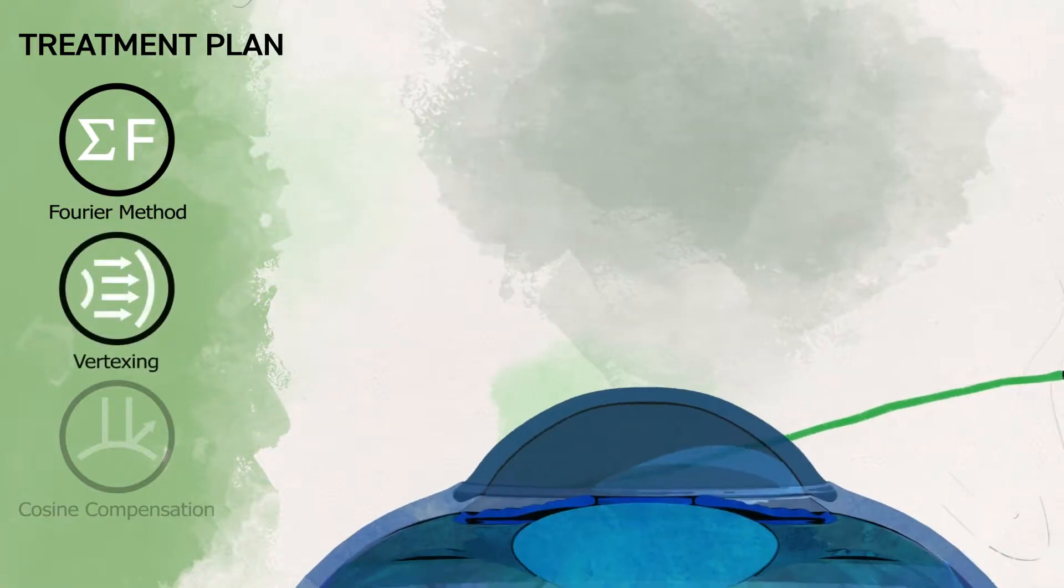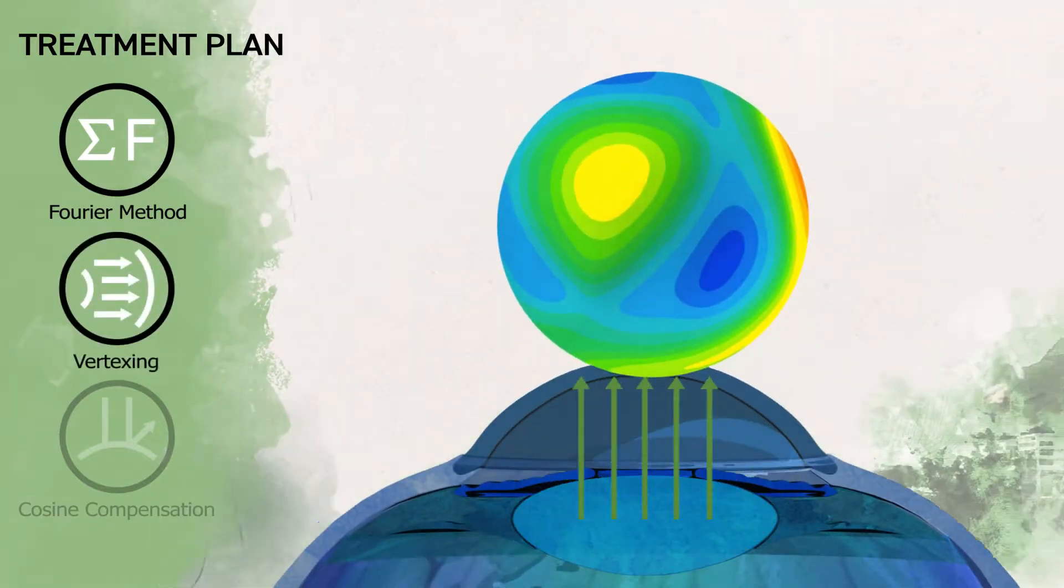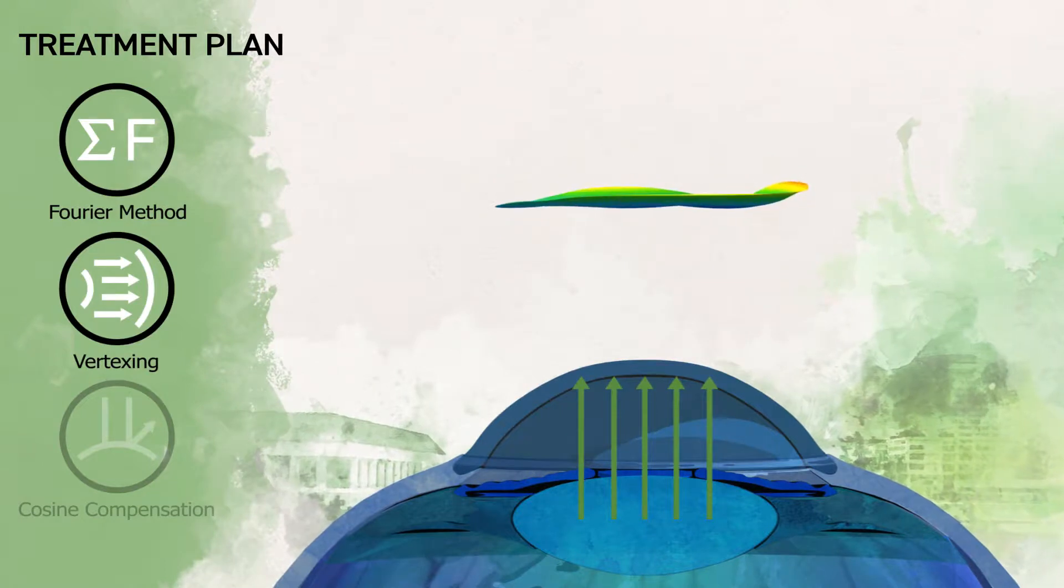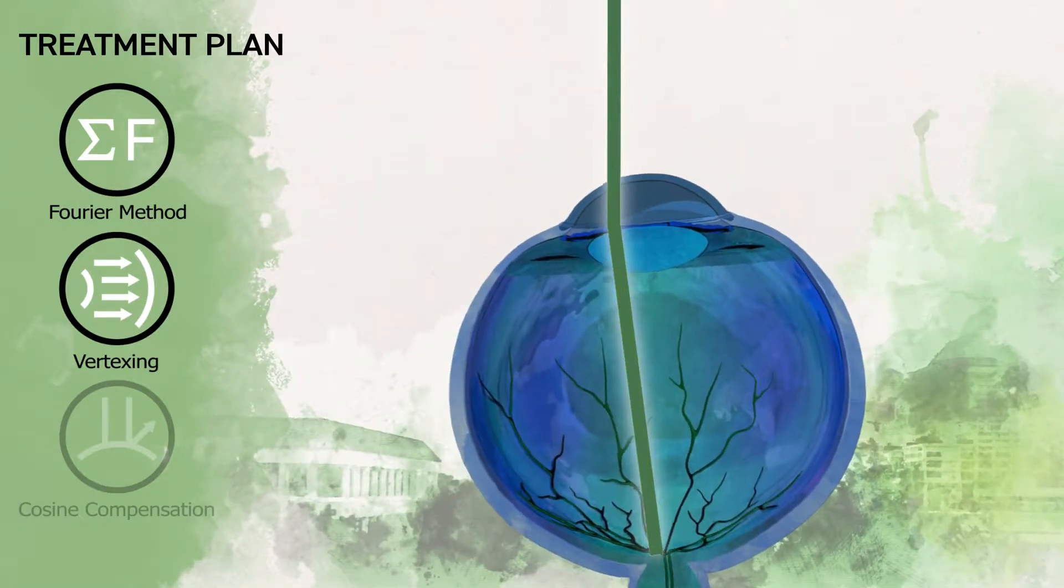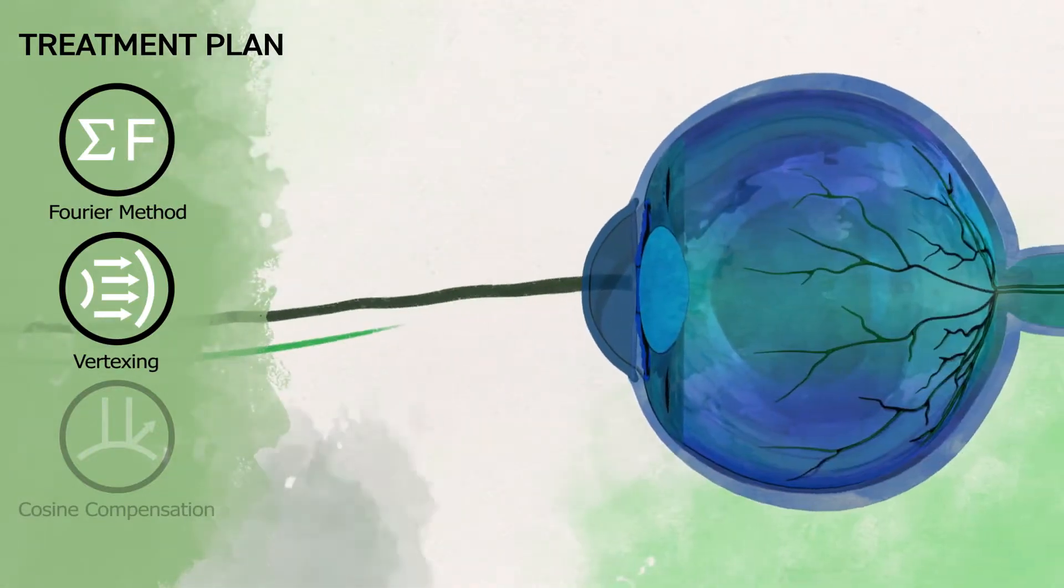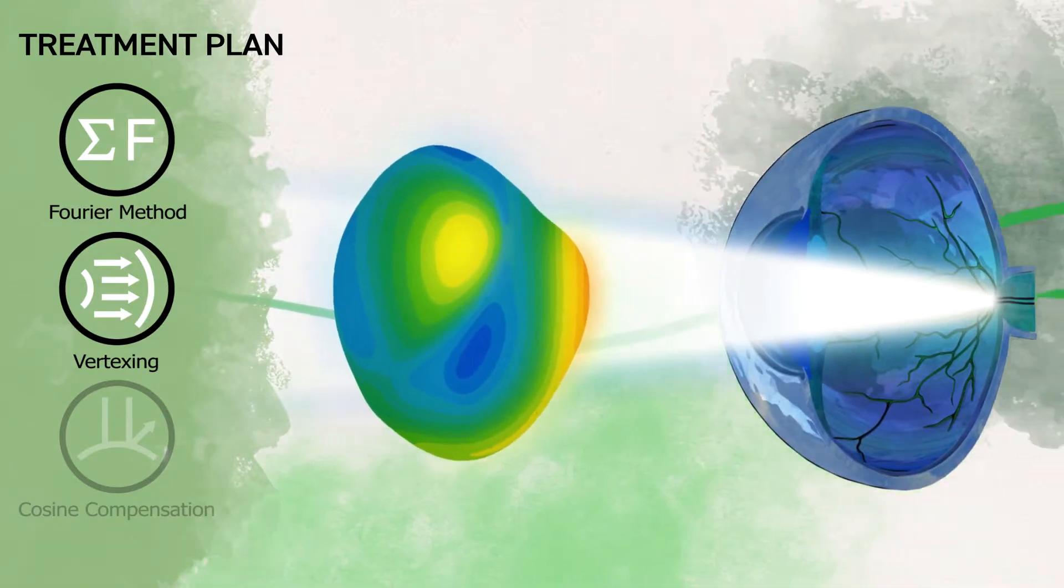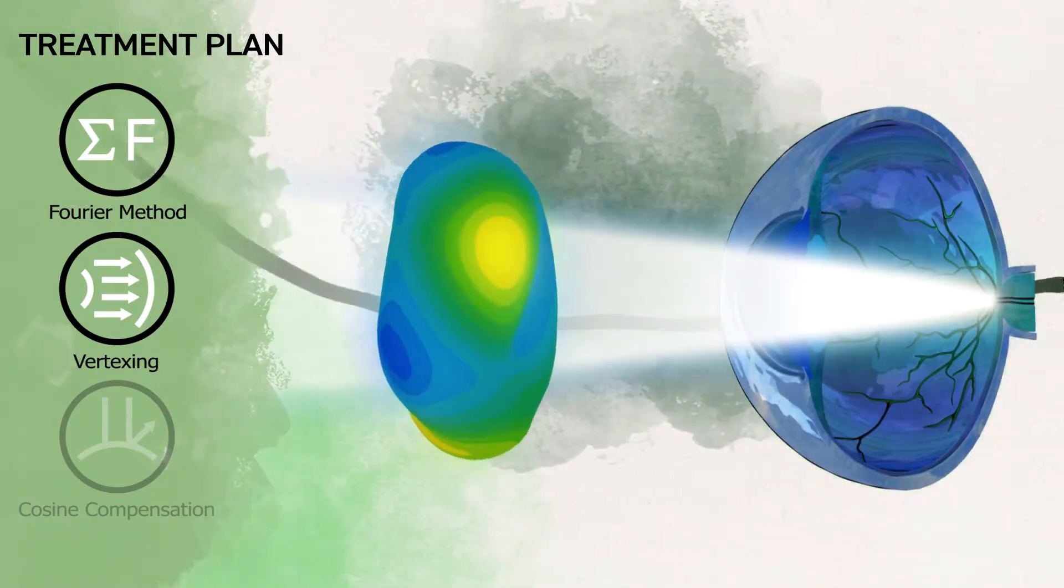Before ablation, the system translates the wavefront measurements from the pupil to corneal surface, considering the minuscule variations of the cornea and its unique combination of steep, flat, and tilt. This process, known as wavefront vertexing, uses the captured topography data instead of K values to create a treatment plan.